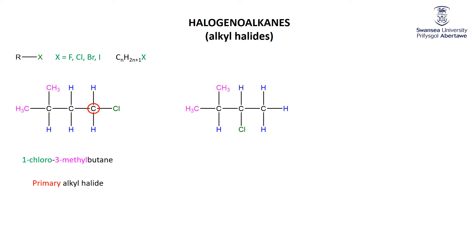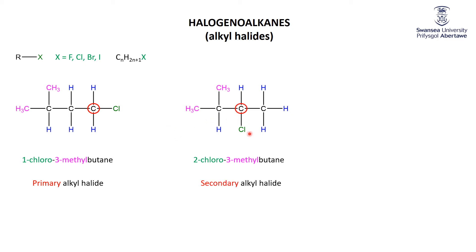For the next example, try to name it before I click. We've got 1, 2, 3, 4 as the longest chain, a methyl group on carbon 2, and a chlorine on carbon 2 as well — so this could be called 2-chloro-3-methyl or 2-methyl-3-chloro; either way it describes the same molecule. This is an example of a secondary alkyl halide, because the carbon to which the chlorine is attached is bonded to two other carbons.